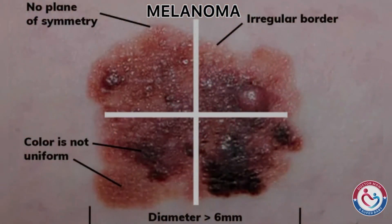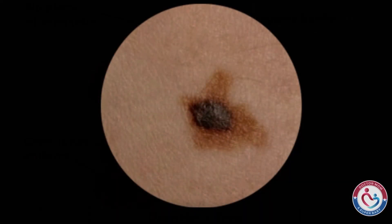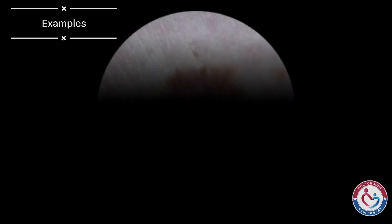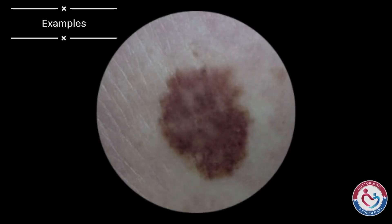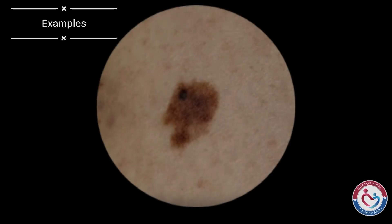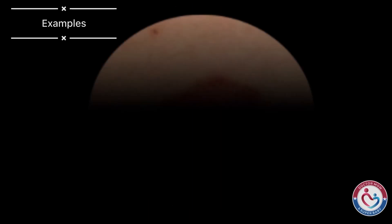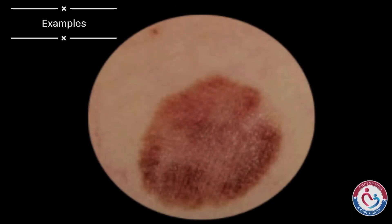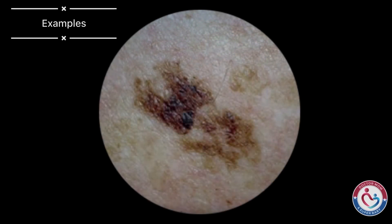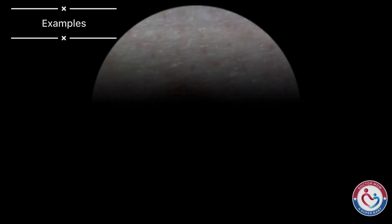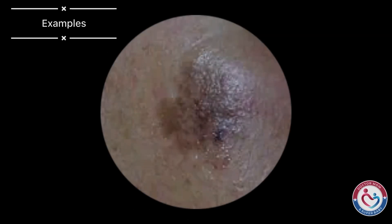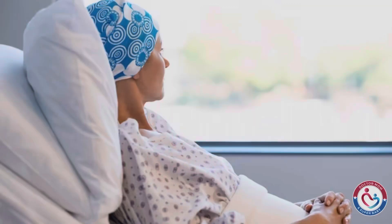Whereas melanoma will have an asymmetrical shape, irregular border, non-uniform color, and a diameter greater than 6mm. It is better to detect it early for a good recovery.